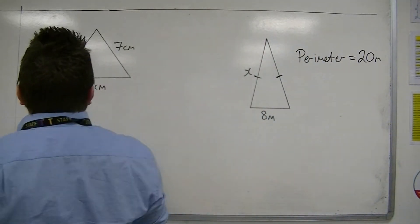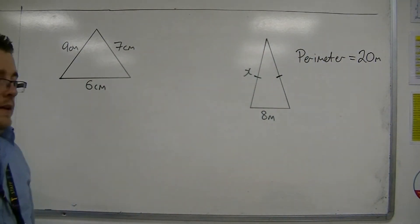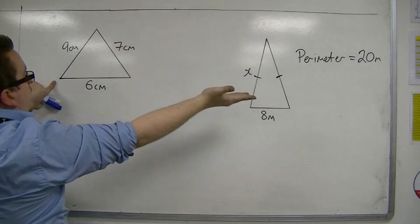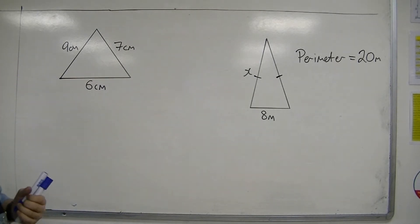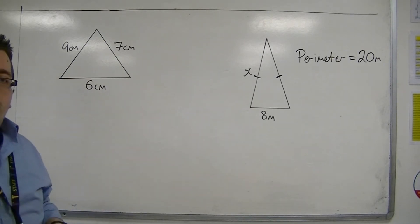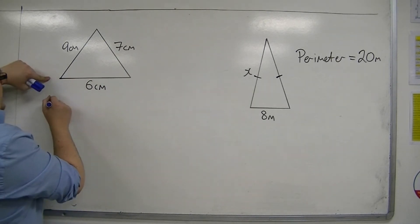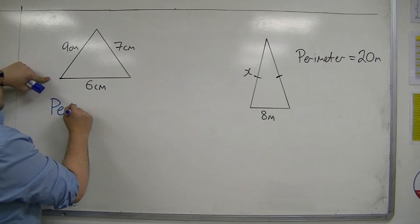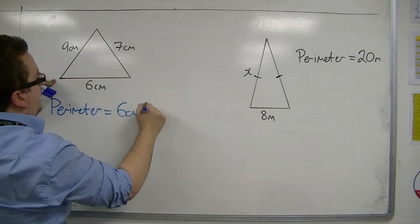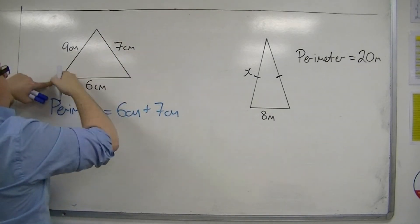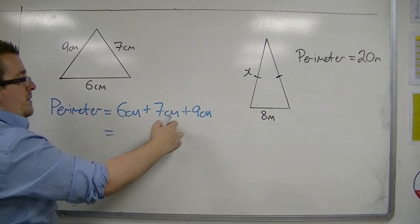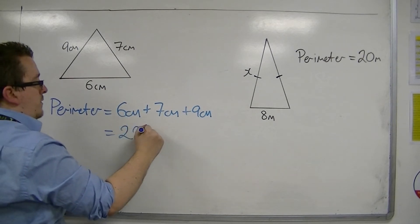So if I was looking for the perimeter of this triangle, it is how long the shape would be if I unravelled it. Or you might think of it as: if I was going to put string around all three sides, how much string would I need? Well, I need to add together the three sides. So I need six centimetres, seven centimetres, and nine centimetres. So the overall perimeter is six plus seven plus nine, which is twenty-two centimetres.